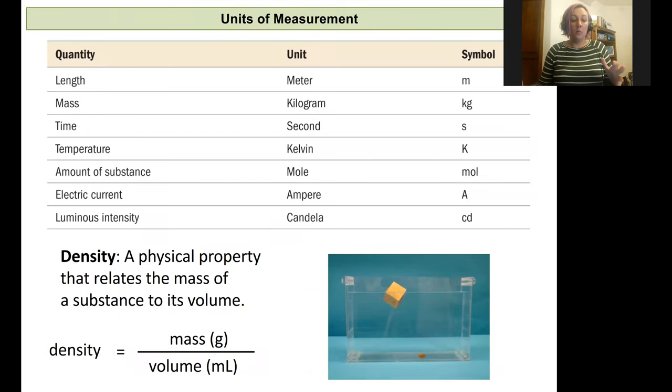For different variables that you can measure like length, mass, time, temperature, they all have a standard unit associated with them. For length, that's going to be a meter in standard units. For mass, it will be kilogram as our standard unit for measurement.